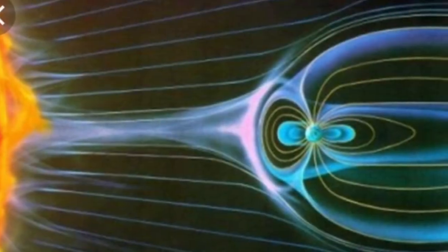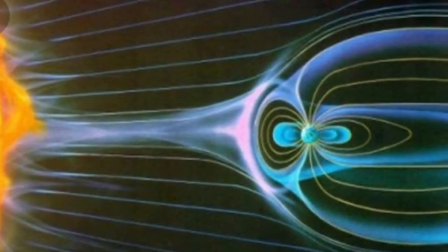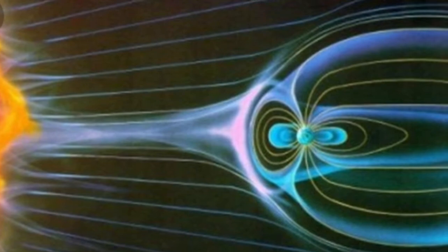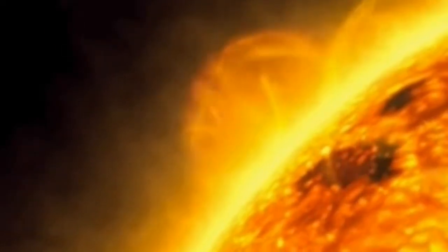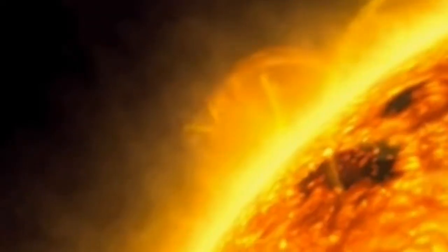CMEs often create the conditions for heightened geomagnetic activity and aurora lights around our home world. According to Dean Pesnel of NASA's Goddard Space Flight Center, this is a natural part of the Sun cycle.